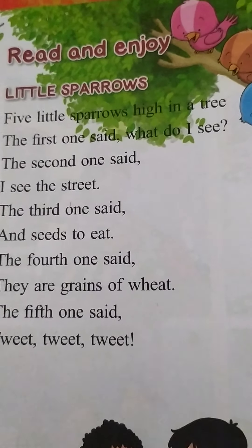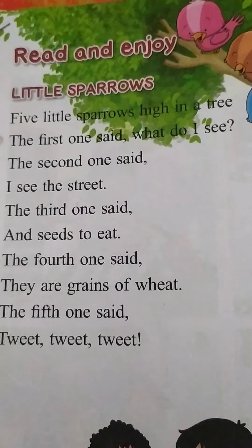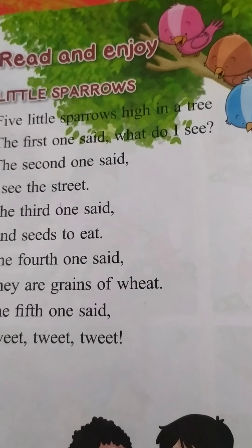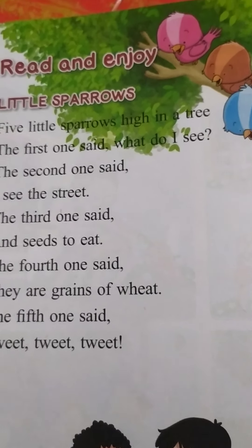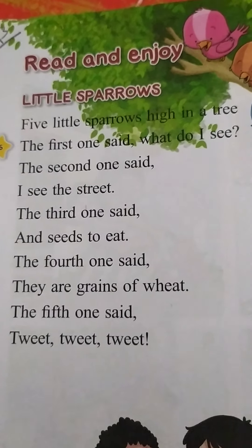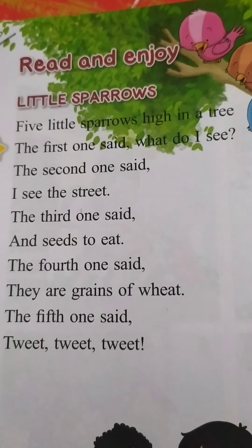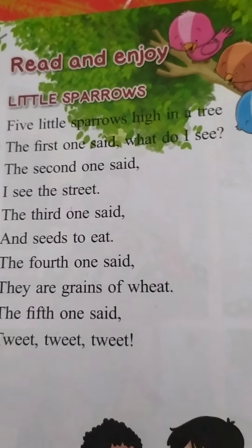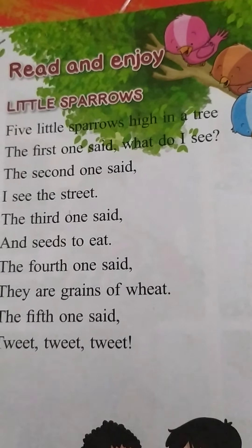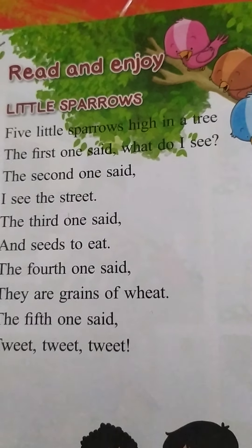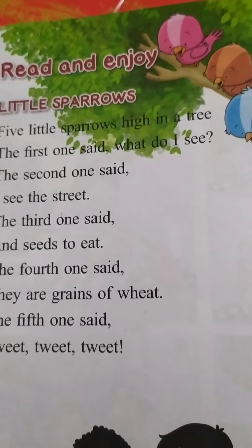Then the third one said, seeds to eat. And the fourth one said, they are grains of wheat. What did the fourth one say, children? They are seeds of wheat. Then the fifth one said, twit twit twit. So they want to eat them — so nice!